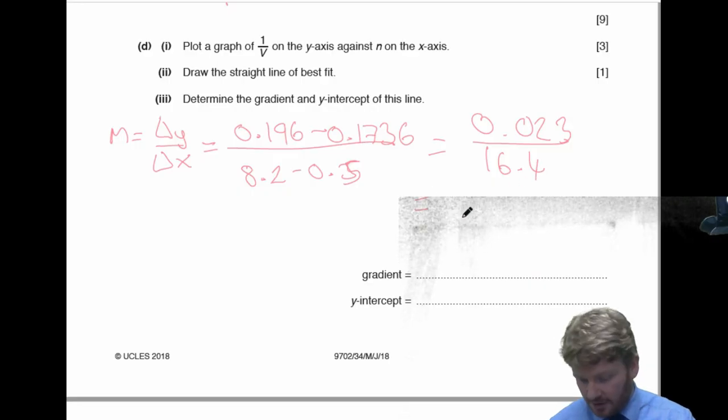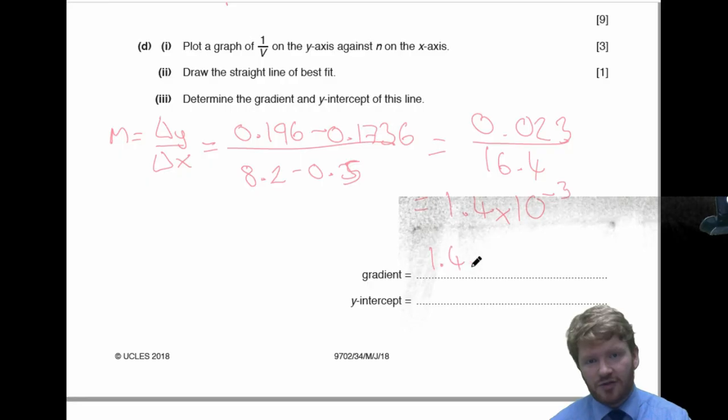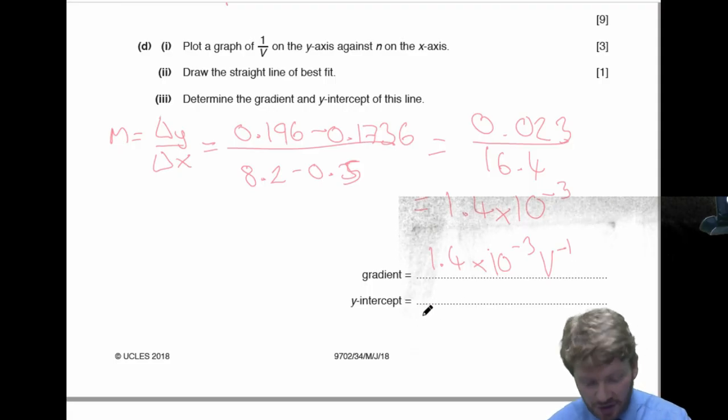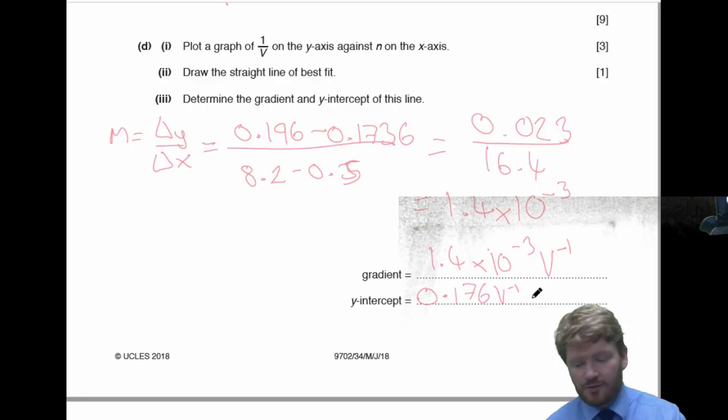So, that is 0.023. So, my gradient will be 1.4 times 10 to the negative 3. And that's just a straight gradient. So, I don't need to put units here. But I'm going to anyway, so that's a per volt divided by a number, so that's a per volt. And my y-axis, I'm just going to read off from my intercept, and my intercept will be 0.176 per volt.